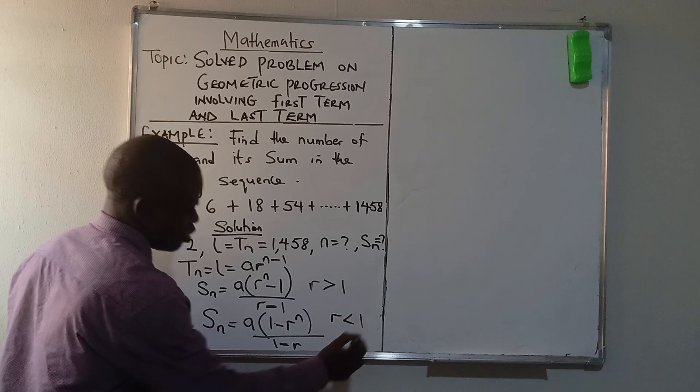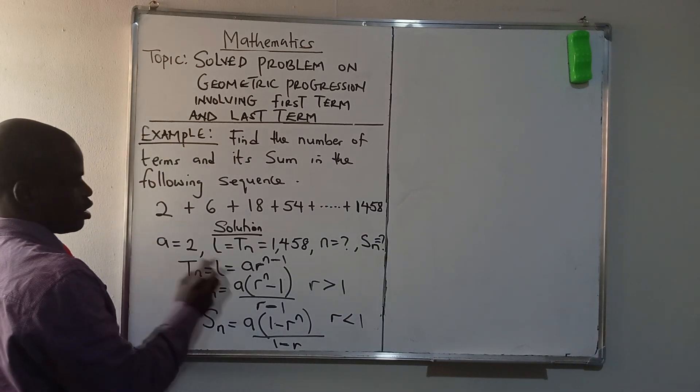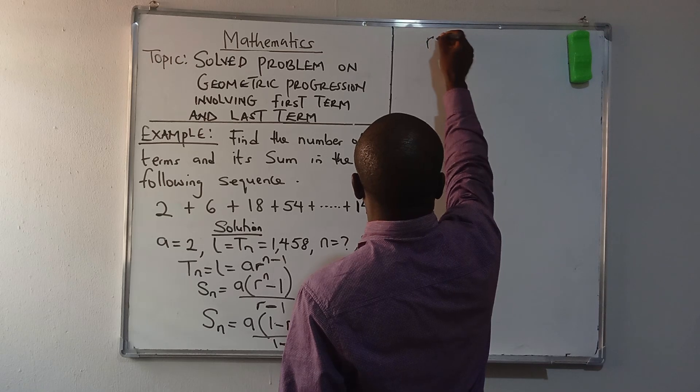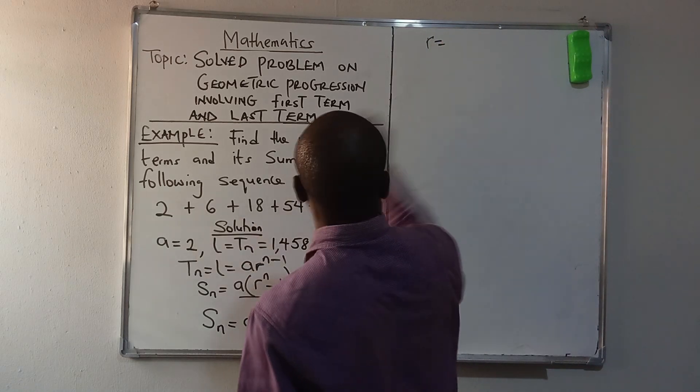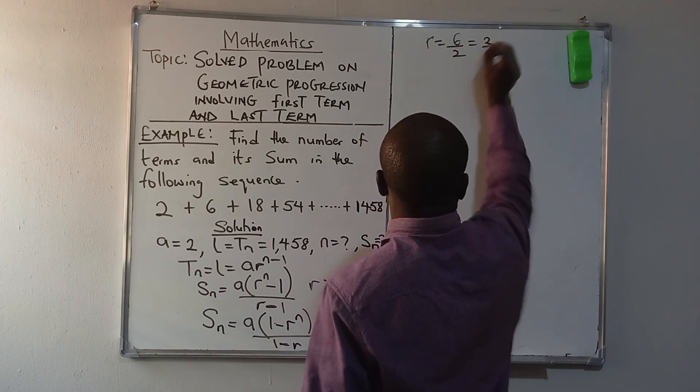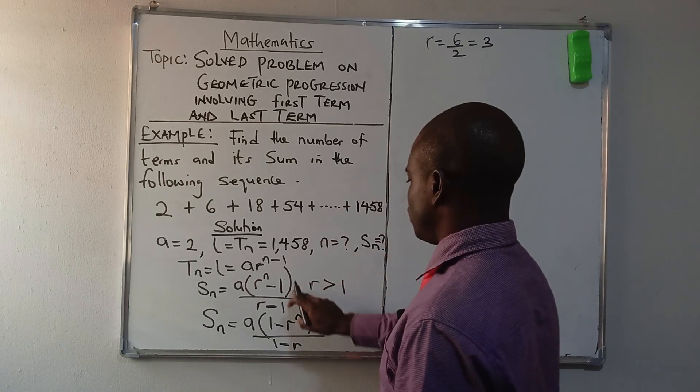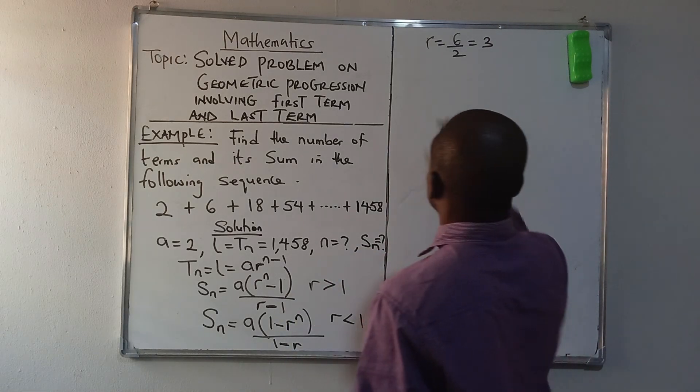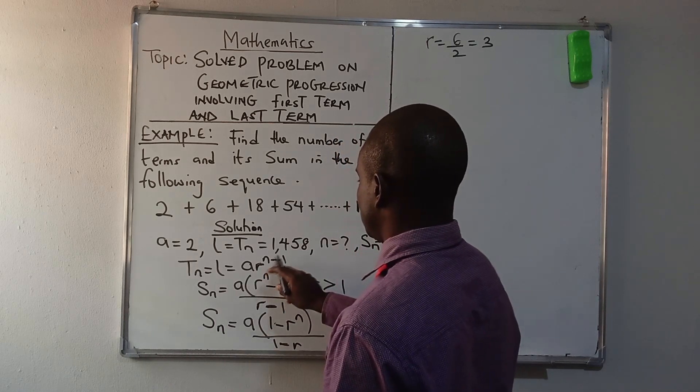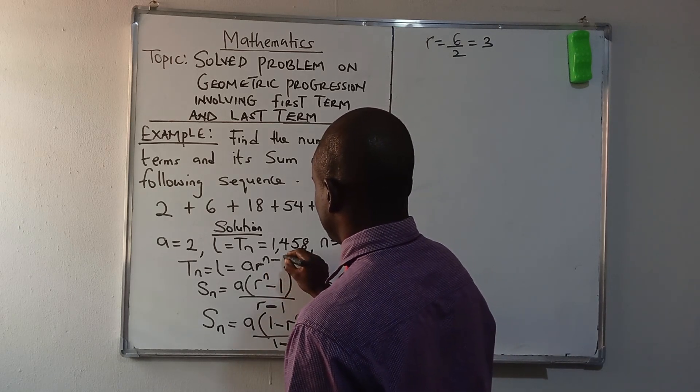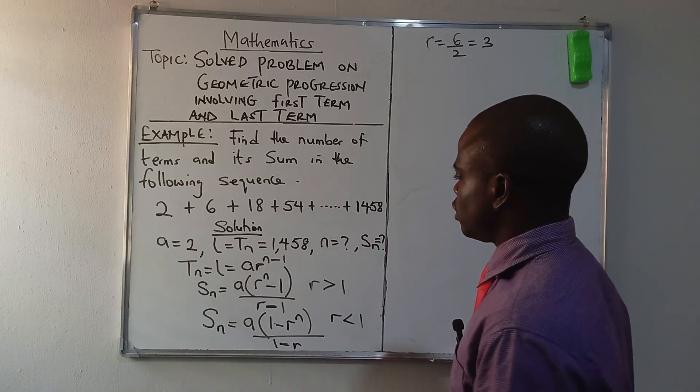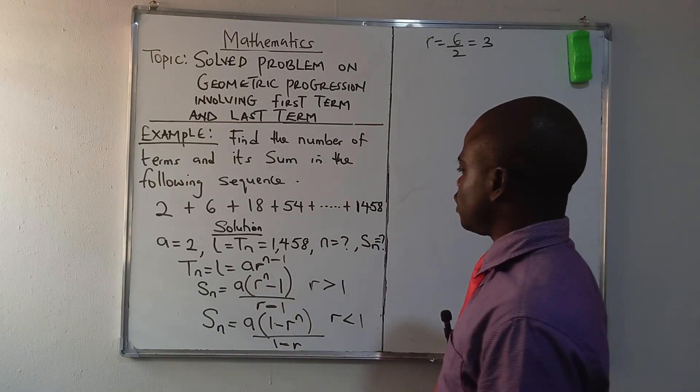Now in this case, what is our common ratio? The common ratio equals 6 divided by 2, that's 3. That means that we can use the first formula of sum. But before then, let's look for our N term. Let's look for the number of terms.